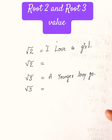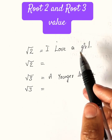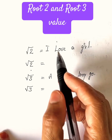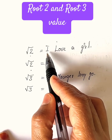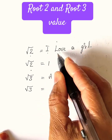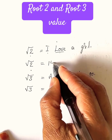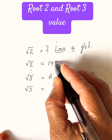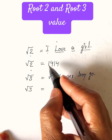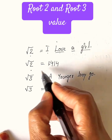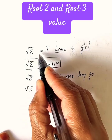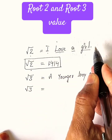Do you know how to remember the value of root 2 and root 3? There is a code to remember this. Root 2 is equals to 'I love a girl.' I represents 1, love represents 4, a represents 1, girl represents 4. So 1.414 is the value of root 2. You have to remember that code: root 2 is equals to 'I love a girl.'